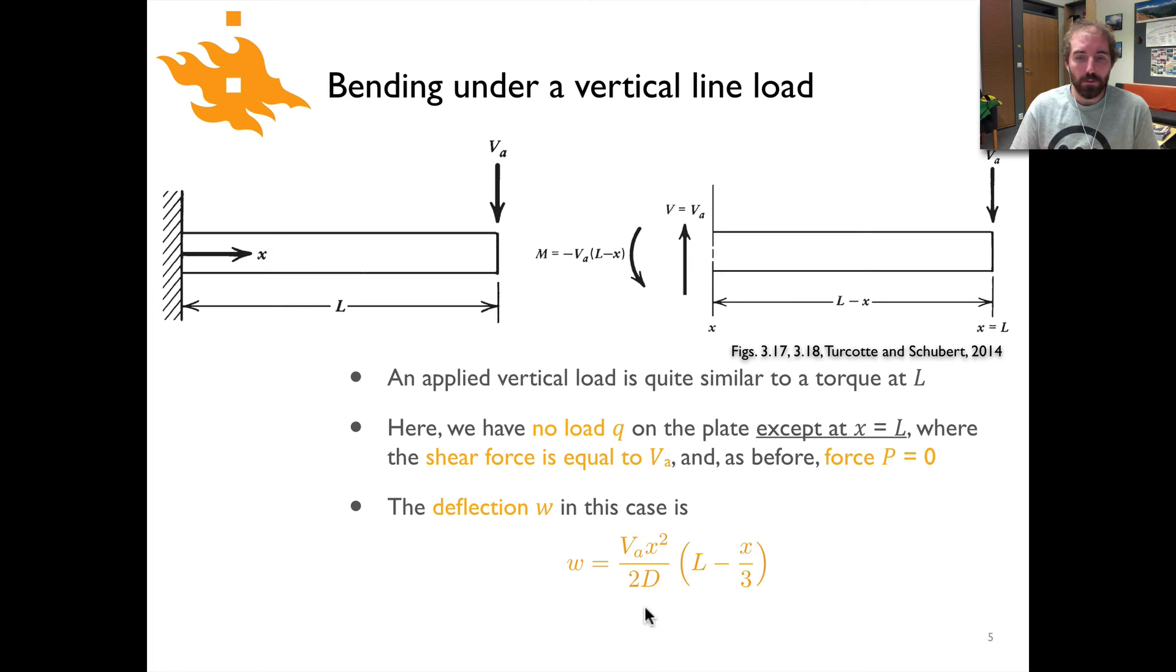In this case, the deflection looks a little bit different. We have W equals VA—our shear force—times x squared divided by 2D. That actually looks a lot like our previous case for a torque, but there's an extra term where we multiply by L minus x over three. That comes from the torque balance. When we apply this shear force at this end of the elastic plate, it results in a torque at the other end as well as a shear force that is balancing. That torque takes the form of minus VA times L minus x.